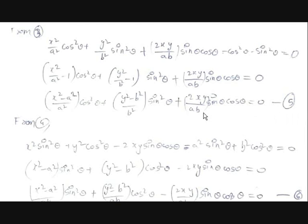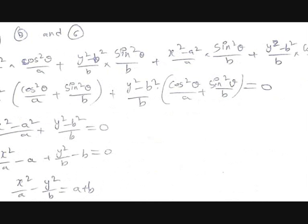We can divide the whole equation by AB, giving: (x² − A²)/AB·sin²θ + (y² − B²)/AB·cos²θ − 2xy/AB·sinθ·cosθ = 0. Call this equation 6.